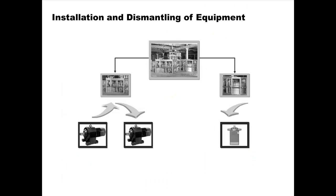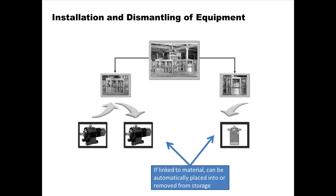When you install and dismantle equipment — which is installed in functional locations — if it is linked to a material, it can automatically be placed into or removed from storage. That is, when you take equipment out of a functional location, the inventory on hand can be incremented automatically. Similarly, when you install equipment in a functional location, the system can take care of the fact that it came from inventory and perform the necessary postings.